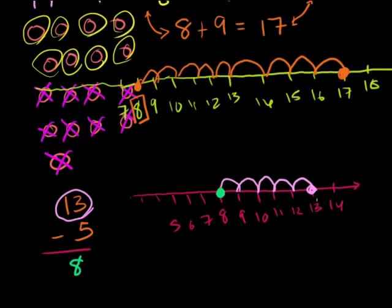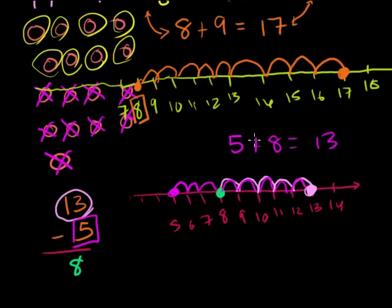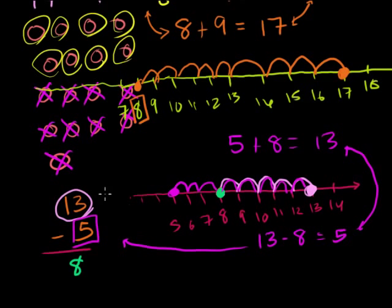Another way: I plotted where 13 is, and I can plot where 5 is. What do I have to add to 5 to get to 13? I go 1, 2, 3, 4, 5, 6, 7, 8 — so I add 8, meaning 5 plus 8 equals 13. That tells me 13 minus 5 equals 8, and also that 13 minus 8 equals 5. All of these are saying the same thing: the difference between 13 and 5 is 8, and between 13 and 8 is 5. It's great practice to take a teen number and subtract any one-digit number from it.